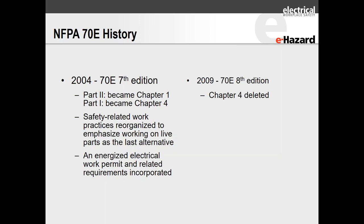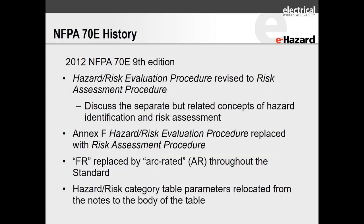In 2009, the eighth edition, chapter four was deleted — it was largely NEC content, and if you want to know what's in the NEC, go to the NEC. In 2012, the ninth edition, the hazard risk evaluation procedure was revised to a risk assessment procedure. The reason for changing the terminology was to align with international standards, using common language and bringing international best practices into North America, avoiding constantly reinventing the wheel. Annex F was replaced with a risk assessment procedure.